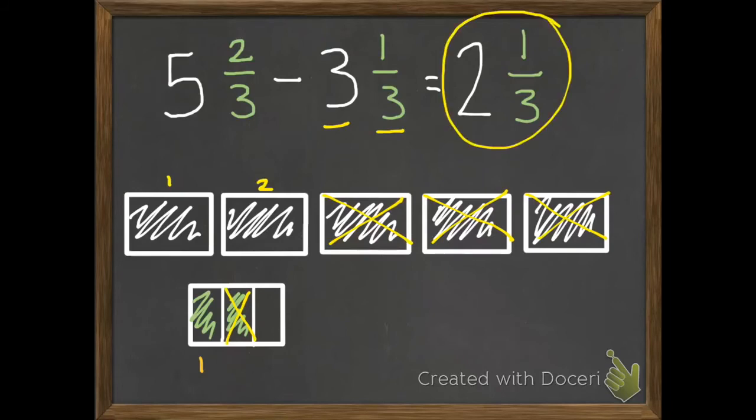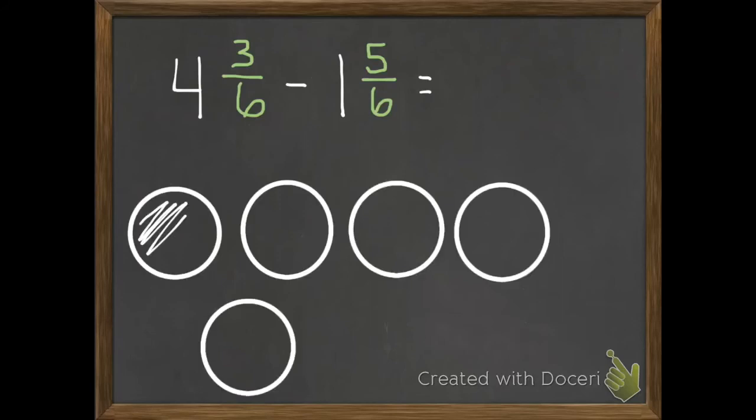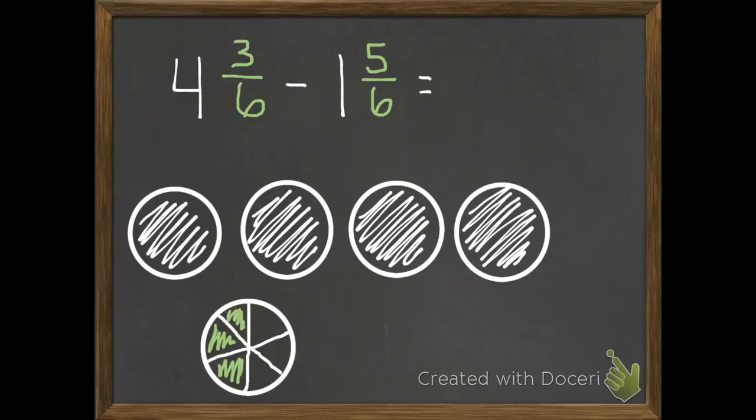Okay, do one more with me. So start drawing your 4 holes and 3 sixths. Here's mine, 4 holes, 3 sixths. And then we need to subtract 1 hole and 5 sixths. So subtract 1 hole. And then we need to subtract 5 sixths. You'll notice I only have 3 sixths, so I'm going to need to divide up one of my holes into sixths so that I have some more sixths.